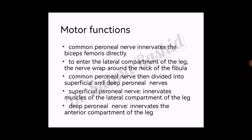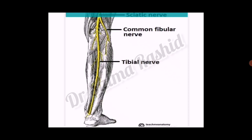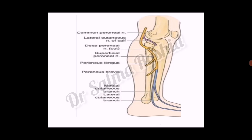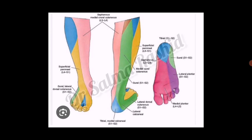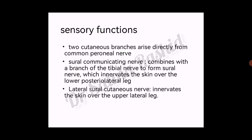In this diagrammatic presentation, you can see in the popliteal fossa the sciatic nerve divides into the common fibular (peroneal) nerve and the tibial nerve. The common peroneal nerve wraps around the neck of the fibula to pass from the posterior compartment to the lateral compartment of the leg. For sensory functions, two cutaneous branches arise directly from the common peroneal nerve: the sural communicating nerve, which combines with a branch of the tibial nerve to form the sural nerve innervating the skin over the lower posterior lateral leg; and the lateral sural cutaneous nerve, which innervates the skin over the upper lateral leg, shown in blue in the diagram.